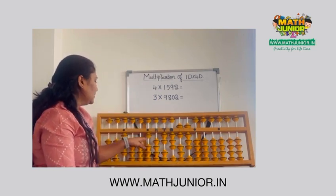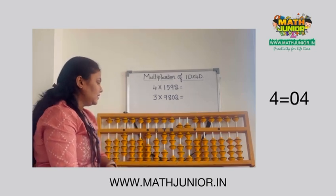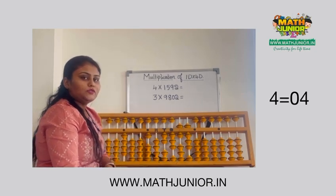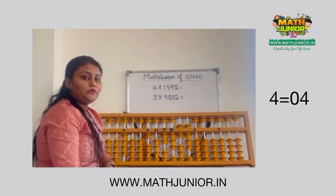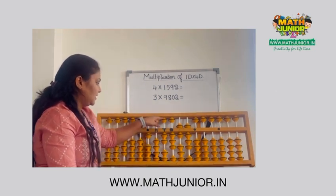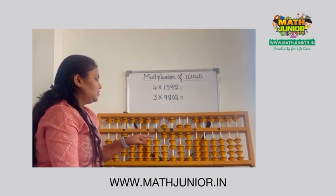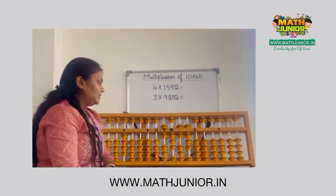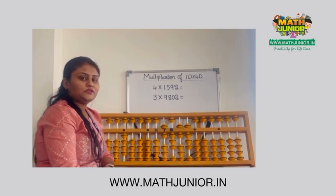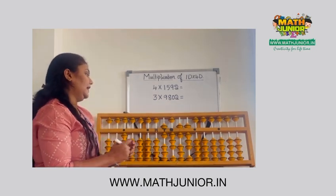Next is 1 times 4 is 4. You need to make it as 04. After 1, place 0 and 4, that is plus 5 and minus 1. So our final answer is 6,368.